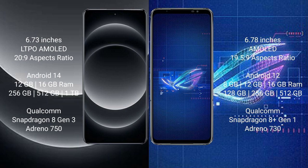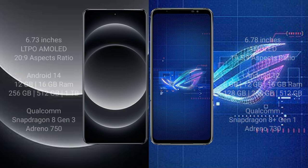Asus ROG Phone 6 comes with 8GB, 12GB, and 16GB RAM and 128GB, 256GB, 512GB internal storage. It features a Qualcomm Snapdragon 823 processor and GPU Adreno 730.